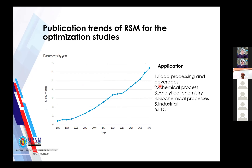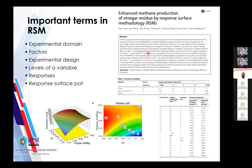Over the past 20 years, there has been a huge increase in papers using RSM. RSM is applied most in food processing, chemical processes, biochemical processes, and industrial applications. Around 2021, approximately 6,000 papers were published related to RSM.